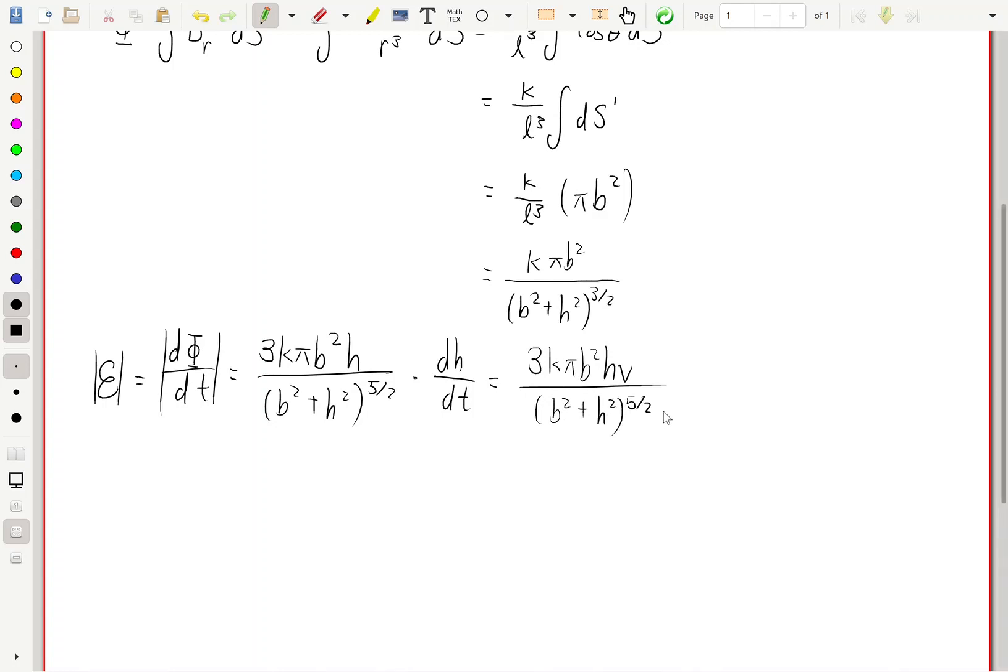This electromotive force is going to give rise to a current, and it's going to dissipate a potential of IR, where i is the current, and the resistance is going to be given by rho times l, the total path that travels in one revolution, which is going to be 2 pi b, over A, the cross-sectional area of the wire.